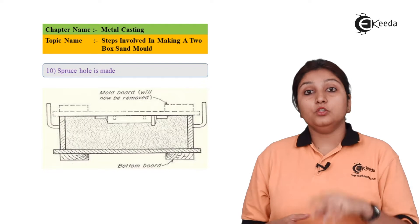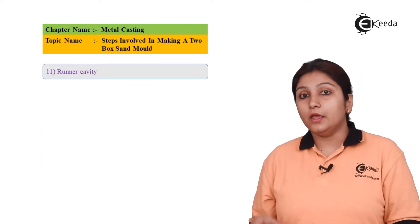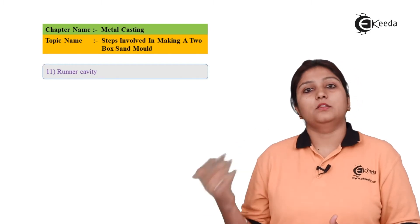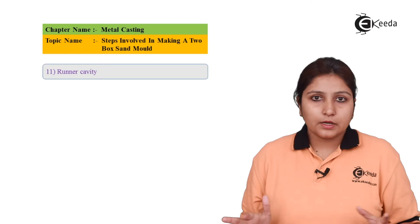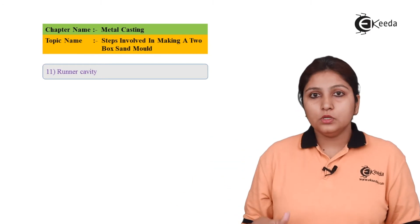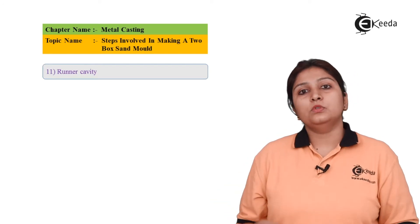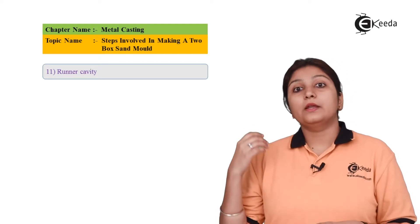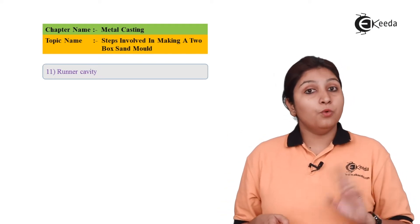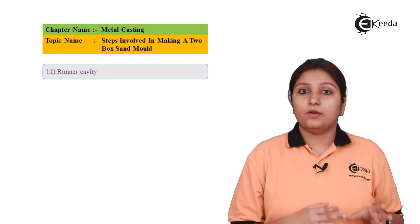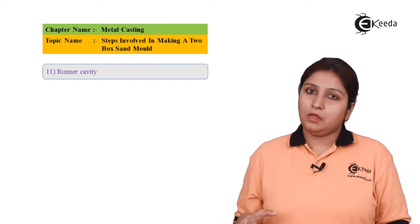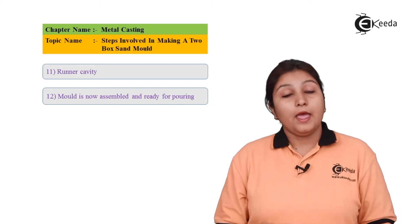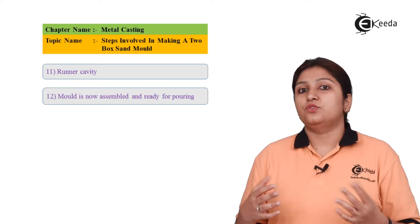After venting, your sprue is added. A hole is provided in your drag as well as in your cope so that it facilitates your sprue cavity, so that a sprue can be added and other processes can be done. As the sprue cavity is prepared, you prepare the runner cavity, and with the gate cutter you make different gates and the riser cavity. Such things are done in both the drag as well as the cope.